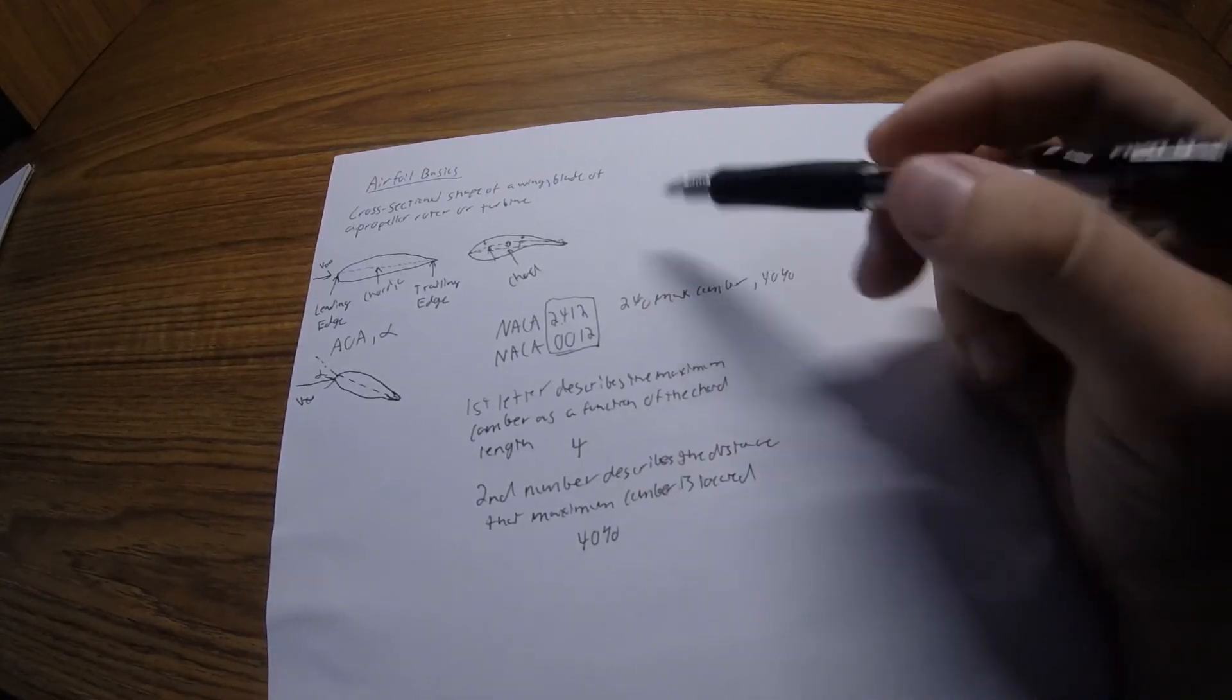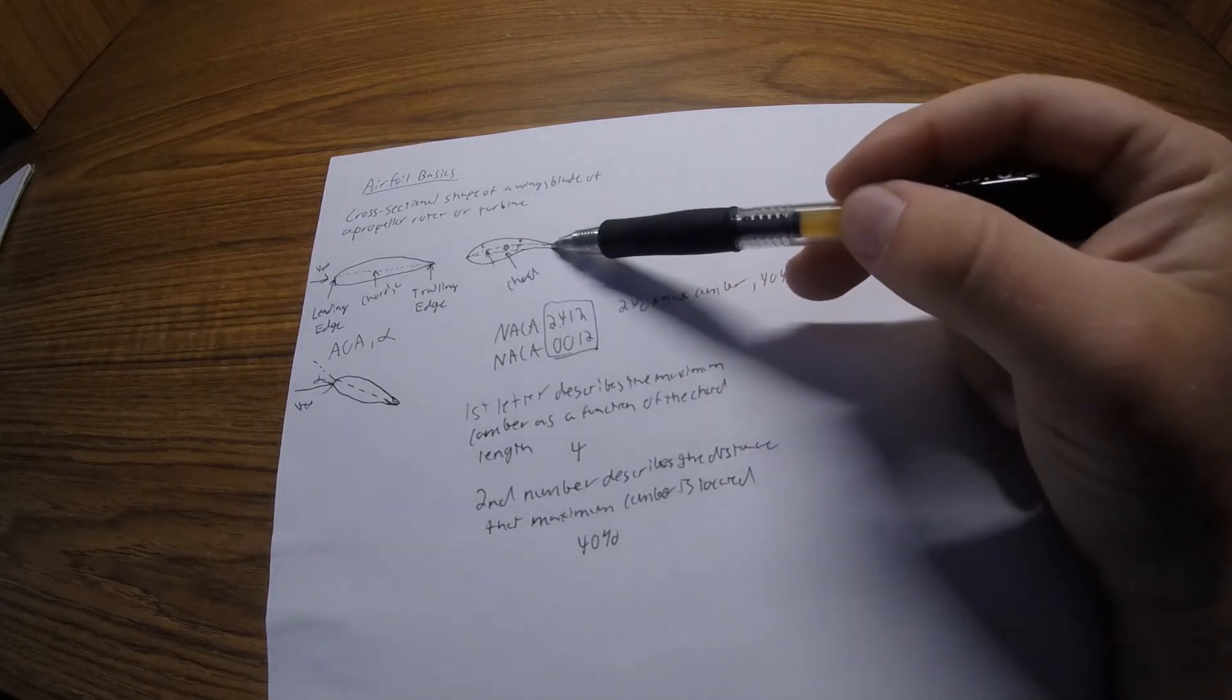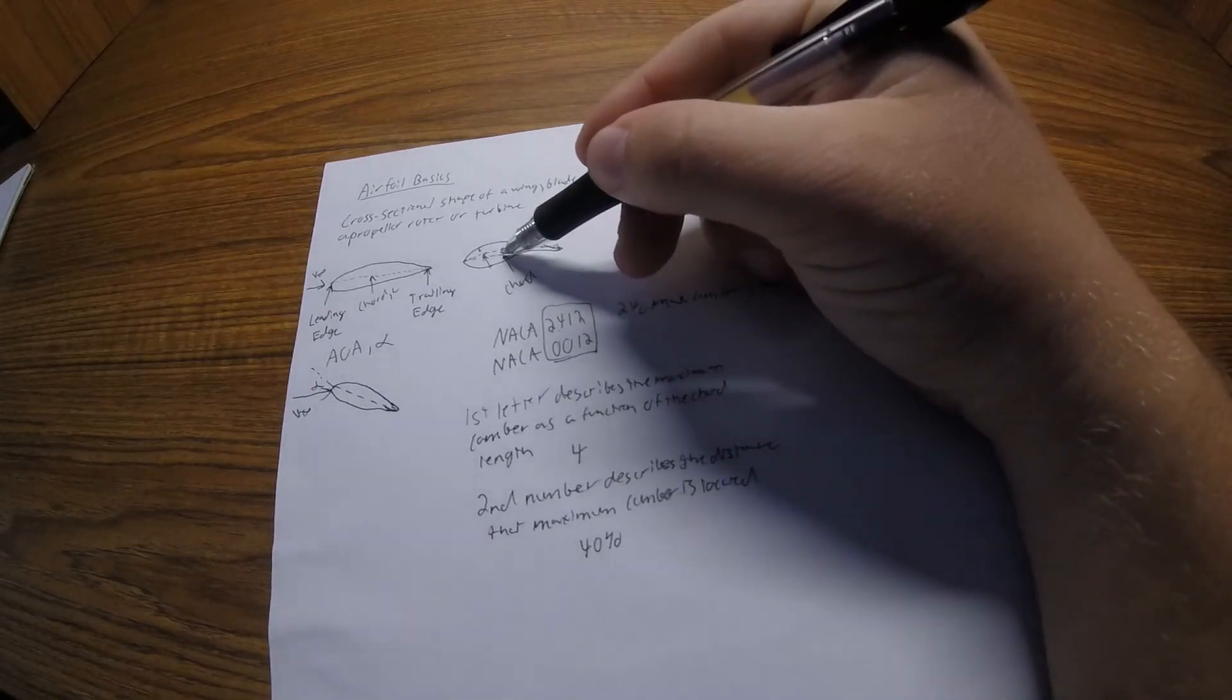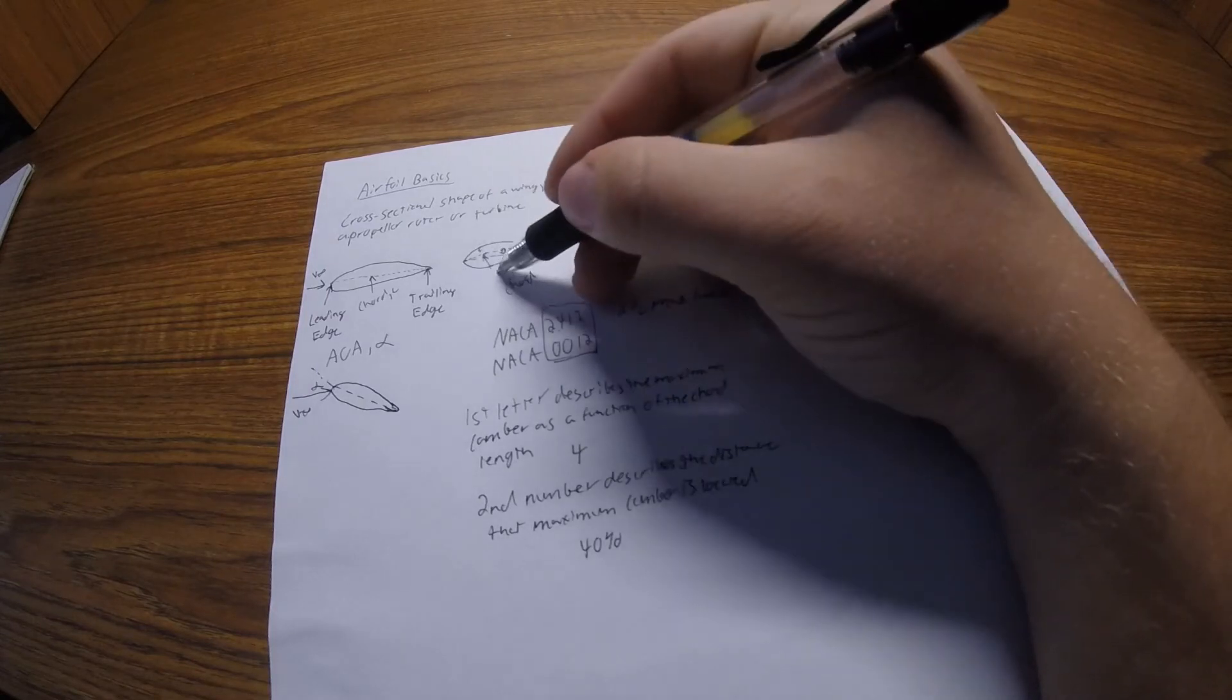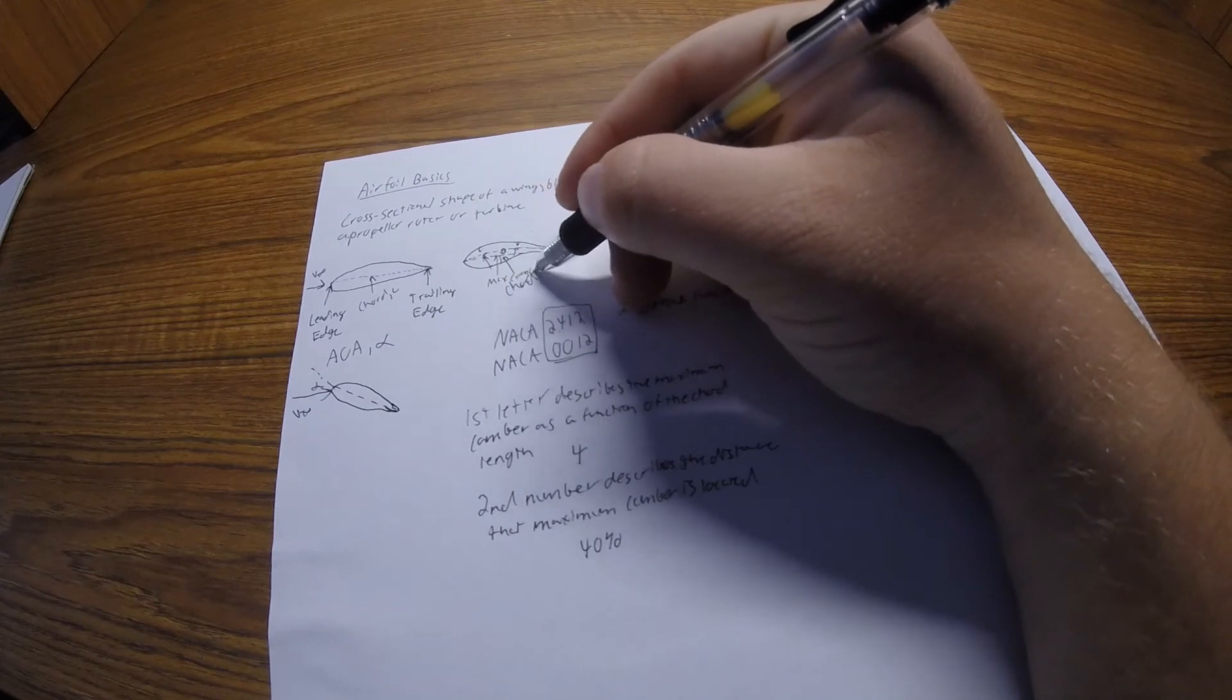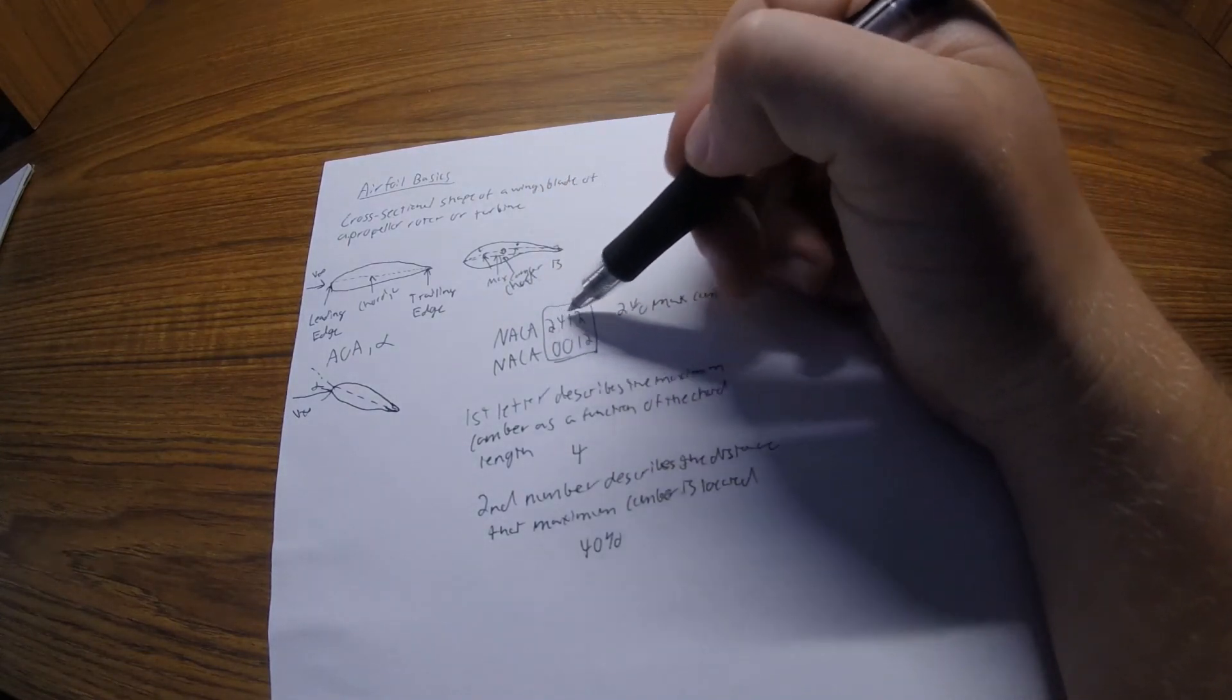If the chord was one meter long, the maximum camber, so the maximum distance between the mean camber line and the chord would be at 40 centimeters from the leading edge. So it would be like right here, would be where the max camber is, if it was a NACA 2412.